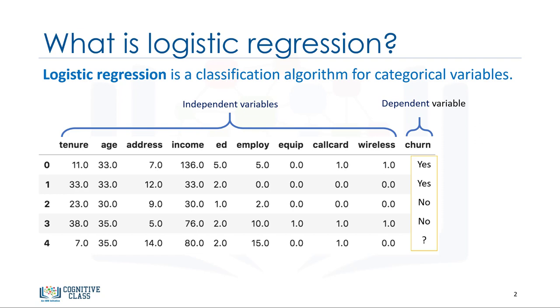But in logistic regression, we predict a variable which is binary, such as yes-no, true-false, successful-or-not-successful, pregnant-not-pregnant, and so on, all of which can be coded as 0 or 1.